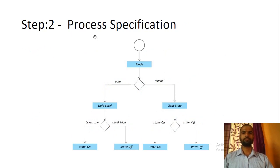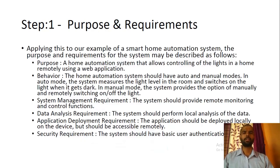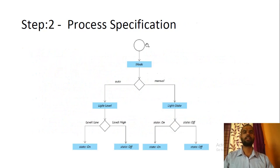As we have discussed the first step, the second step is Process Specification. We already discussed the purpose and requirements of the system, and in this step we define how these requirements will work — that is, the process specification or process flow specification.